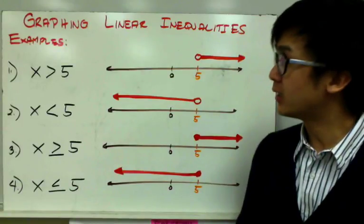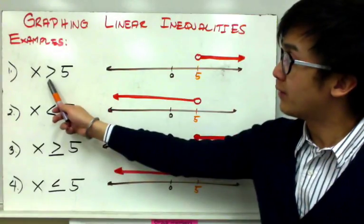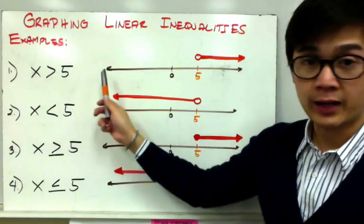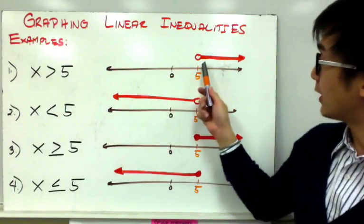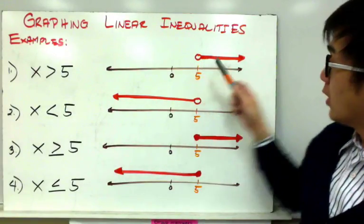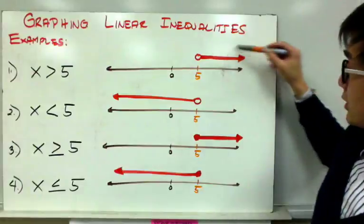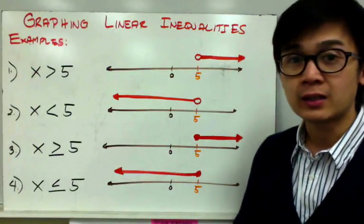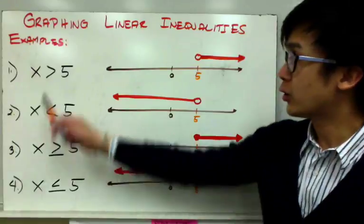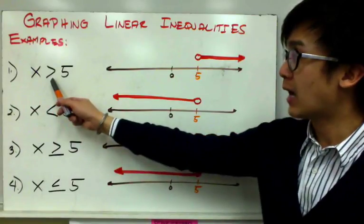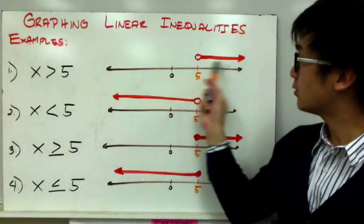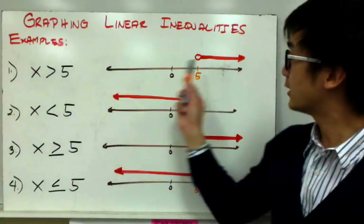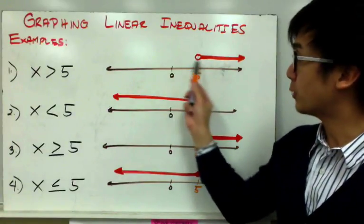The trick here is pretty simple. If you have an arrow pointing towards the right, your shaded region will be towards the right. That's how I remember how to shade a linear inequality graph — if the pointed arrow is moving to the right, I shade it to the right. And since this is a greater than symbol, it's going to be an open circle.